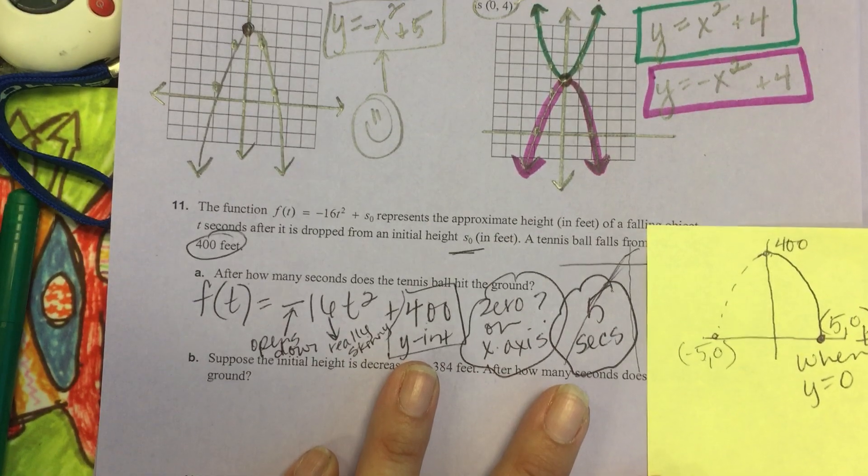Because one of these intercepts is 5, 0. X-intercepts. What would be the other one? Yeah. Yeah. The zeros of this function are negative 5 and 5. The only one that makes sense is the positive 5 because we're talking about time. We're not going back in time.